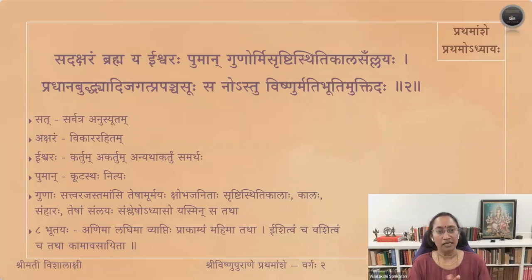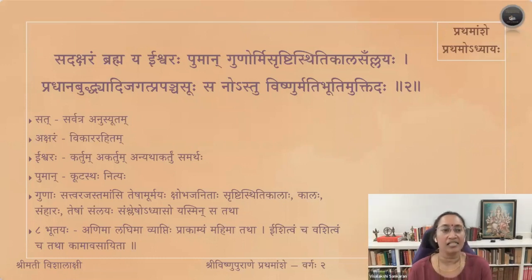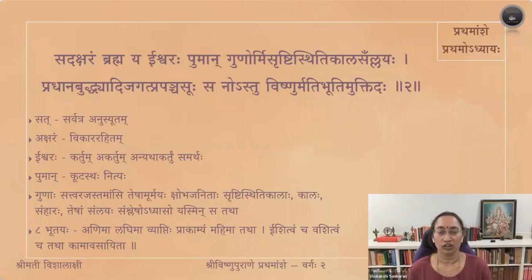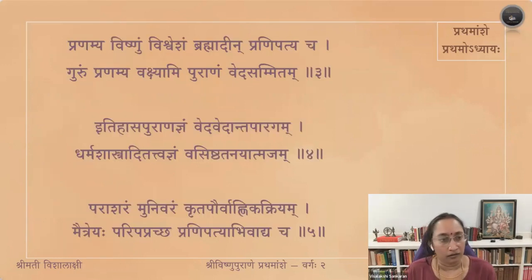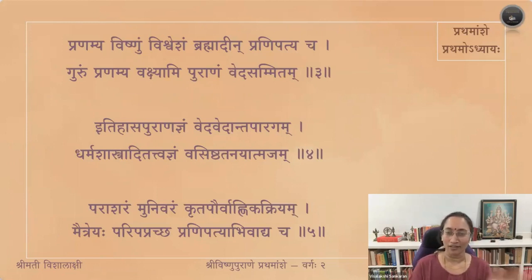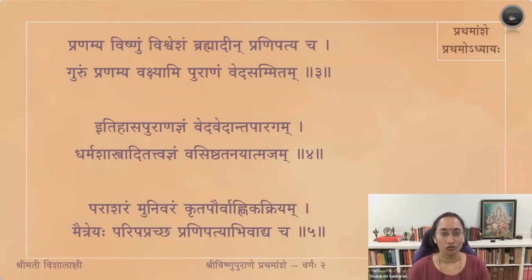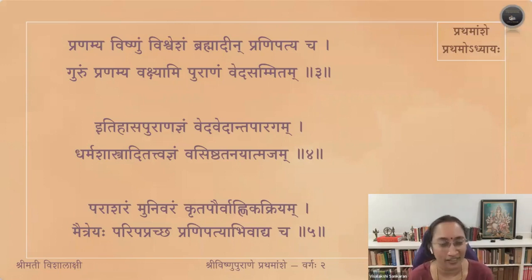So the full second shloka: sadaksharam brahma eeshwaraha pumana gunormi-srishti-sthiti-kala-sallayaha pradhana-buddhyadi-jagat-prapancha-suhu — sano astu vishnu mati-bhuti-mukti-daha. The next part of the adhyayam is simpler — Vishnu Puranam language is very simple. You will find only one or two shlokas requiring so much explanation; the rest will flow very easily.